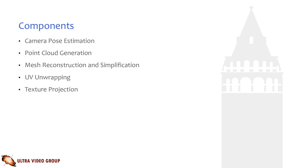The main components of Open3D Gen are as follows: camera pose estimation, point cloud generation, mesh reconstruction and simplification, and UV unwrapping and texture projection. While these are not the only components used, they are the most impactful. The point cloud generation stage is important as well, but due to the simplicity of projecting depth images into point clouds, this stage will not be discussed in more detail in this presentation. All of these stages are examined in more detail in the paper.